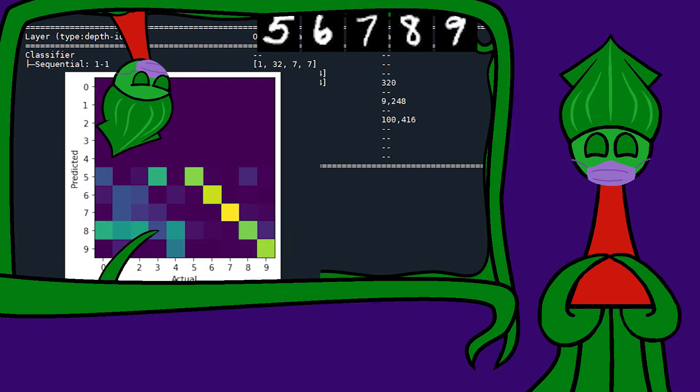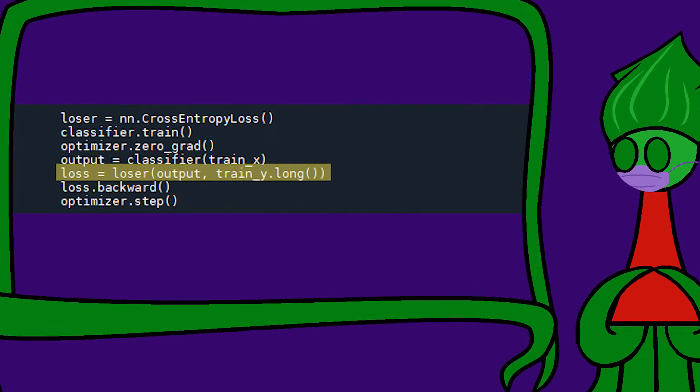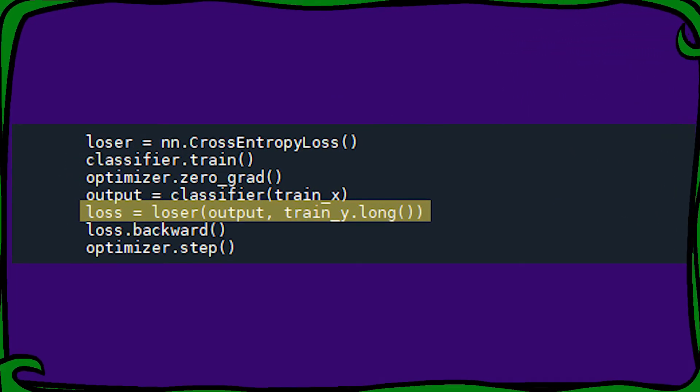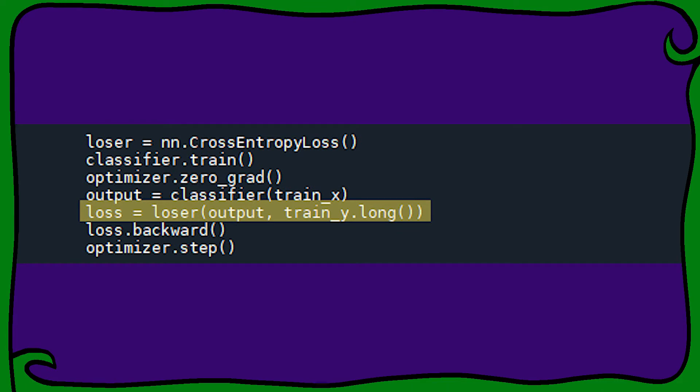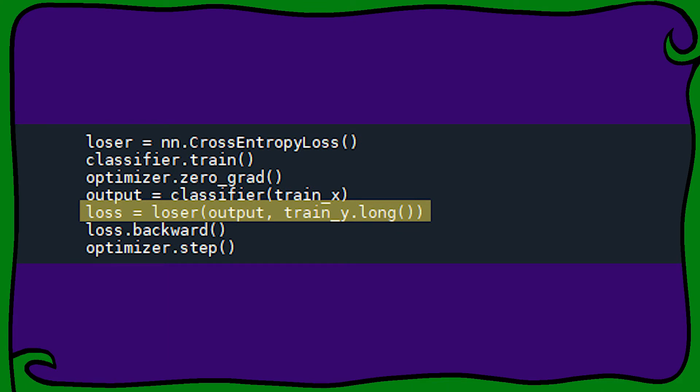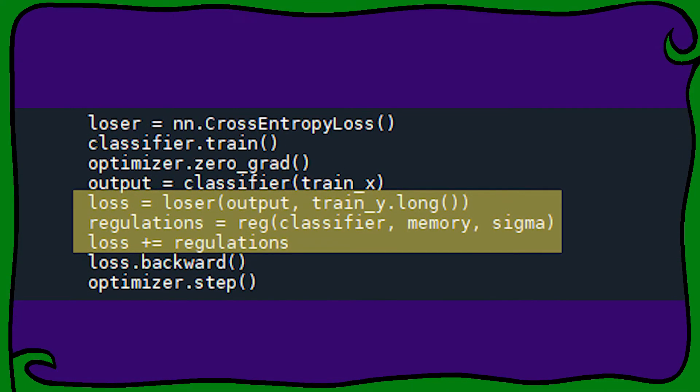A modern solution to this modern problem is regularization. A model trains by minimizing the loss it gets comparing its outputs to correct answers. We can add regularization to that loss.